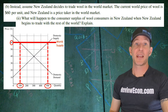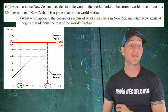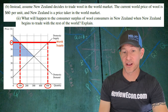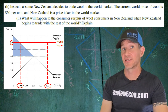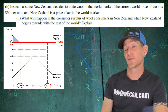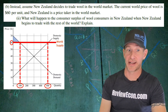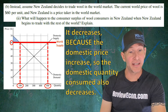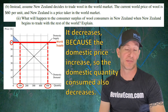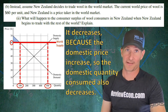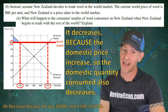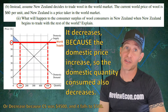For part BII, we have to say what happens to consumer surplus for wool in New Zealand when they trade with the rest of the world, and we have to explain. Consumer surplus was the larger triangle before international trade, but since the price has risen to $60 and the quantity domestically consumed has decreased to 100 units, consumer surplus shrinks. Consumer surplus decreases because the domestic price increases. You can explain this way, or go the math route: consumer surplus was $4,500 and falls to $500 — either explanation is acceptable.